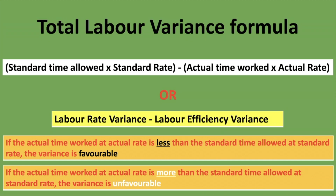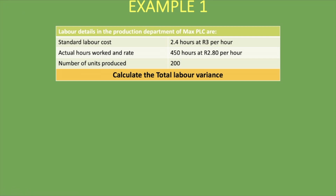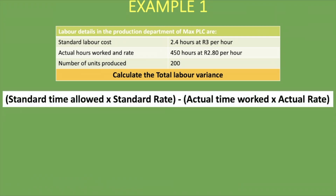Let's go through the first example. The labor details in the production department of Max PLC are: standard labor cost is 2.4 hours at 3 rand per hour. Actual hours worked and rate is 450 hours at 2 rand 80 per hour. The number of units actually produced is 200. We are asked to calculate the total labor variance using the formula: standard time allowed × standard rate minus actual time worked × actual rate.